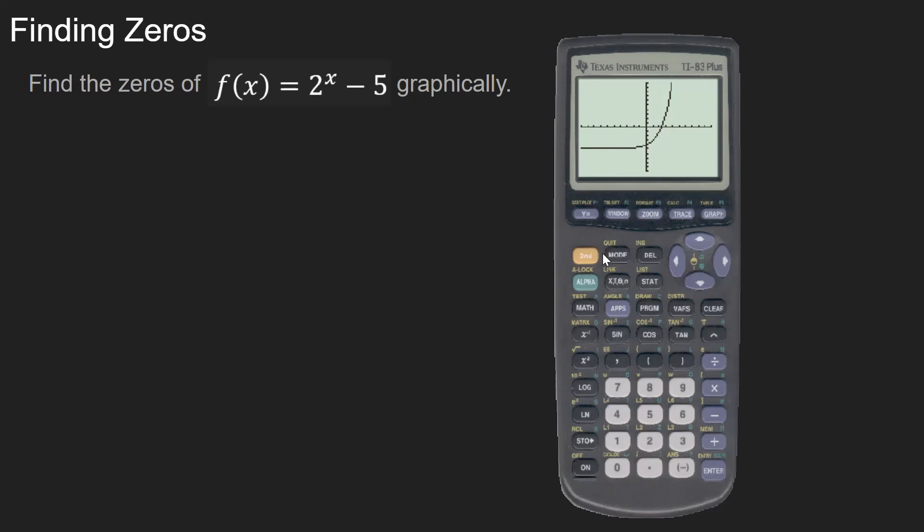Now, the zero is right here, and you can have the calculator do this. Never hit over and say, okay, the zero is 2.34. Don't even hit trace, hit second, calculate, and then you want number two. And what you'll do is you'll pick a point to the left of the zero, and a point to the right of the zero.